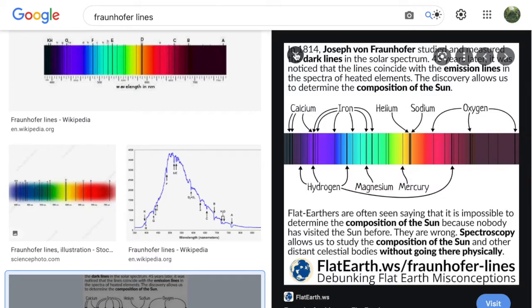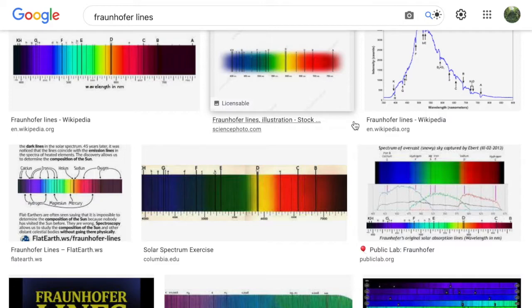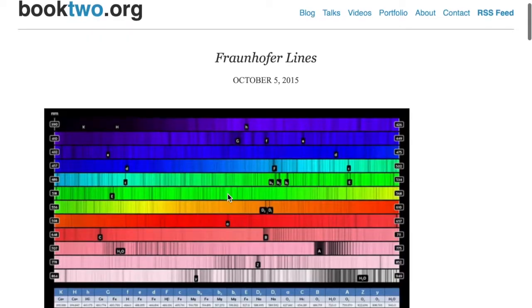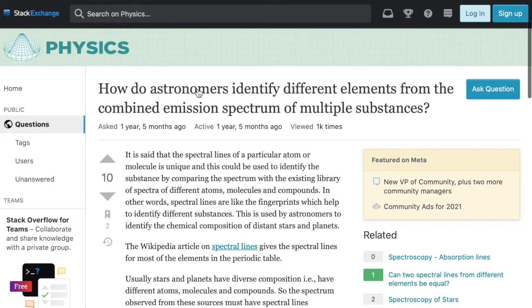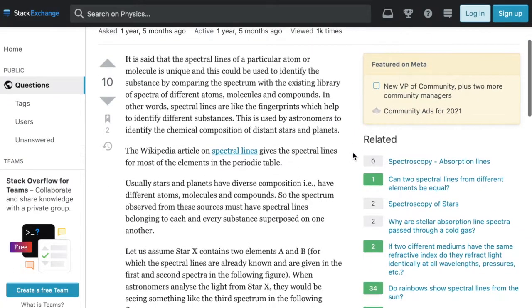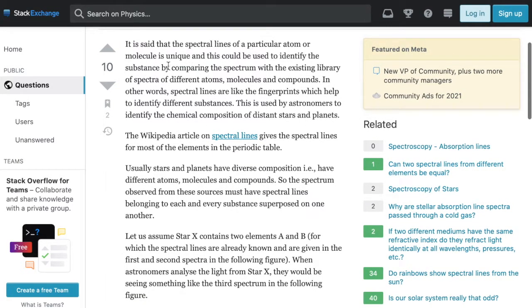The answer is in how they detect it. They detected, they figured out these lines in a completely different way. Here, take a look here. This is the actual one. And you go, look at all those lines, you can pick out which line is from which element. This says it best. How do astronomers identify different elements from the combined emission spectrum of multiple substances? It is said that the spectral lines of a particular atom or molecule is unique, and this could be used to identify the substance by comparing the spectrum with the existing library of spectra of different atoms. How did they get the library of spectra of different atoms? That's a good question. In other words, spectral lines are like the fingerprints which help to identify different substances. This is used by astronomers to identify composition of different stars and planets.